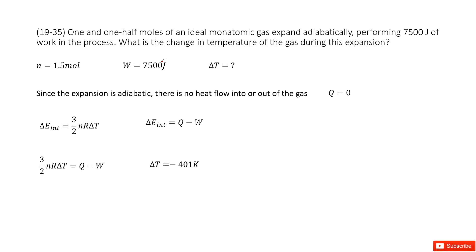Chapter 19 is about heat, the first law of thermodynamics. So we can see this process, we have the ideal gas. The ideal gas, the mole number is 1.5 mole, and the work done by this gas is 7500 joules. And also it tells us this is an adiabatic process.